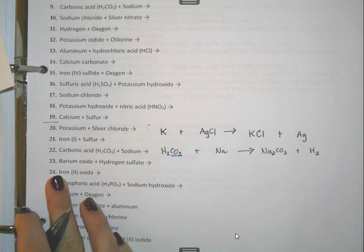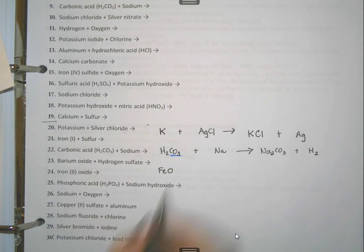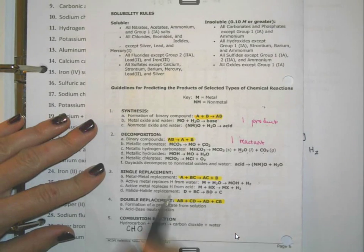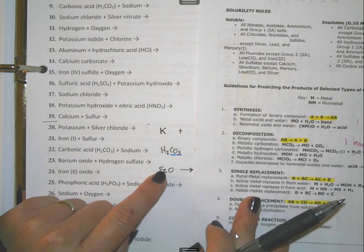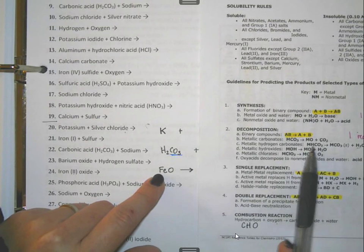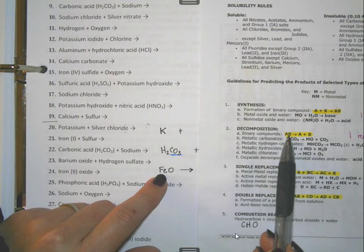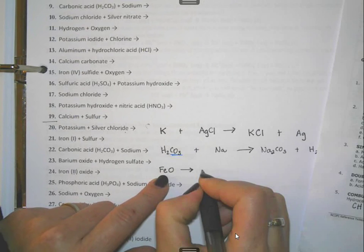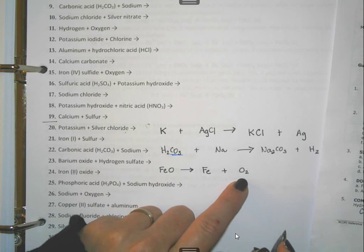Problem 24: iron-2 oxide. Iron-2 oxide is FeO — the 2 gives the charge of the iron. There's only one reactant with an arrow, so looking at reaction types, one reactant means decomposition. How we split it depends on what it is. This is not a metal with carbonate, hydroxide, or chlorate — it's just a binary compound made of two elements. We simply split into element A and element B: iron and oxygen. Oxygen must be written as O₂ because it's part of Brinkelhoff, always written diatomically.